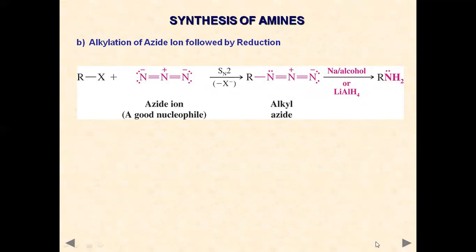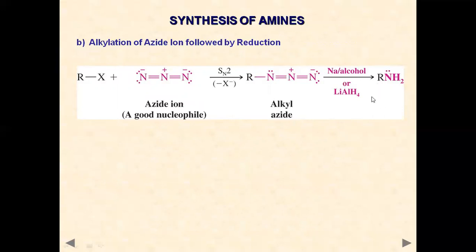The next reaction is alkylation of azide ion followed by reduction. The azide ion, having a negative charge and lone pair, attacks the positive carbon center, resulting in removal of the halide ion to give an alkyl azide group — this is also an SN2 reaction. This alkyl azide on reaction with sodium in alcohol or lithium aluminum hydride (a reduction step) results in removal of nitrogen and addition of hydride to give the corresponding alkyl amine.